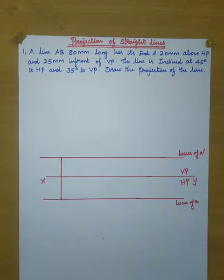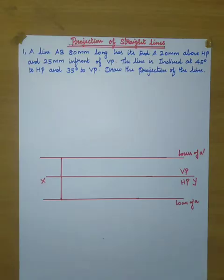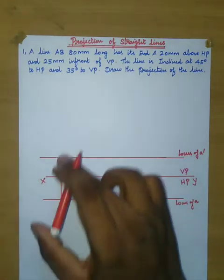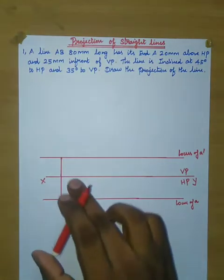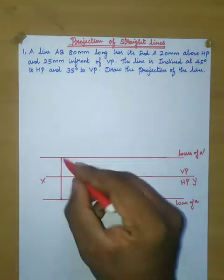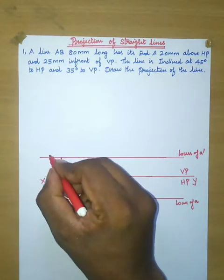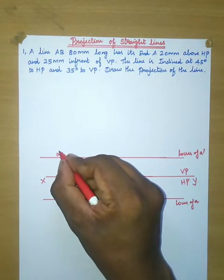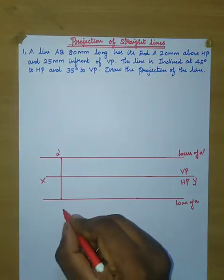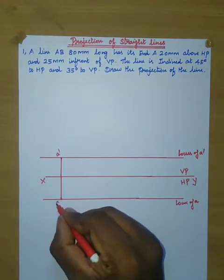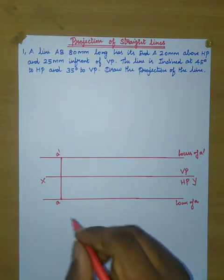Now, what they have given: a line AB, 80mm long, has end A 20mm above HP and 25mm in front of VP. Draw a line 20mm above HP and 25mm in front of VP. Mark this point as A' and this point as A.